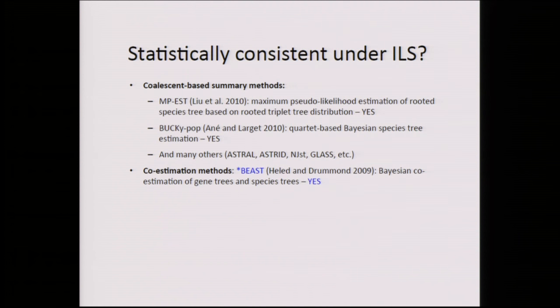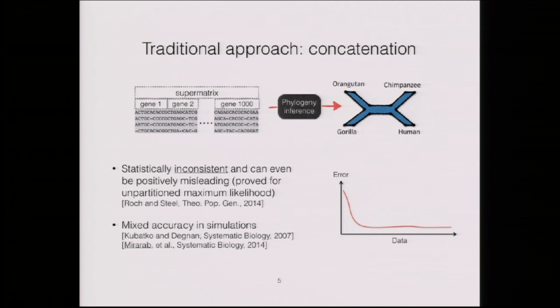Co-estimation methods are even better — they take gene sequence alignments and co-estimate gene trees and species trees simultaneously, with nice statistical guarantees and very good results. We'd like to use co-estimation methods but they're too slow, so we're focusing on whether summary methods can give us species trees. The main competition is concatenation, as these are the only ones that are reasonably fast. Unfortunately, unpartitioned maximum likelihood is provably statistically inconsistent for some model species trees — that's a theoretical theorem, not just a simulation.